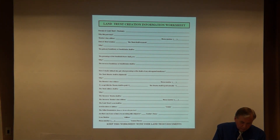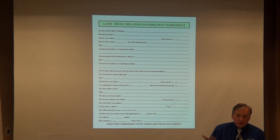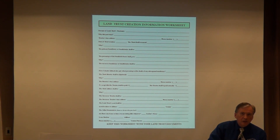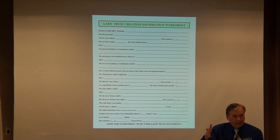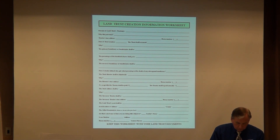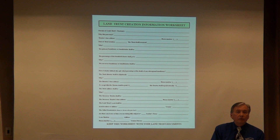The percentage of the beneficial shares go to whomever you choose — it could be yourself as the 100% property beneficiary. If you're going to use the successor beneficiaries of the trust, then what goes here is the name of the personal property trust and the name of the trustee of the personal property trust. It should not be the same trustee as the first trust.